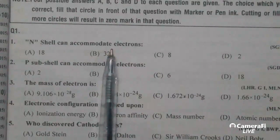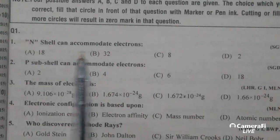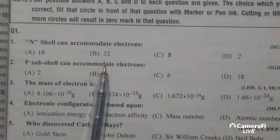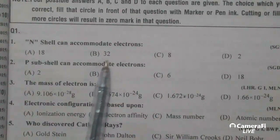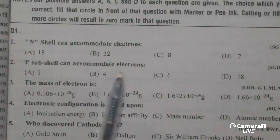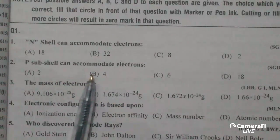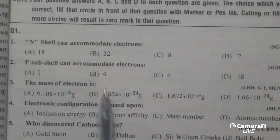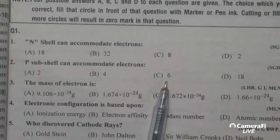N shell can accommodate electrons. N shell میں کتنے electrons آ سکتے ہیں, 32 electrons. P subshell can accommodate electrons. P subshell میں 6 electrons آ سکتے ہیں.